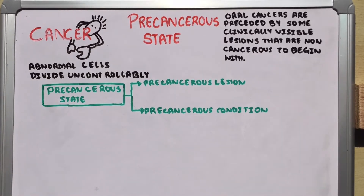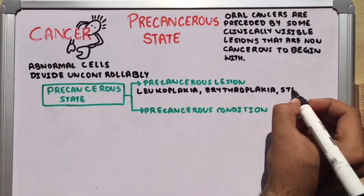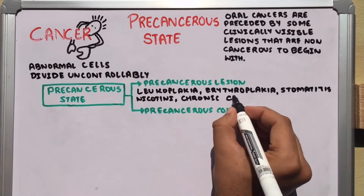A precancerous lesion is defined as a morphologically altered tissue in which cancer is more likely to occur than in its apparently normal counterpart. Examples include leukoplakia, erythroplakia, stomatitis nicotiniae, and chronic candidiasis.